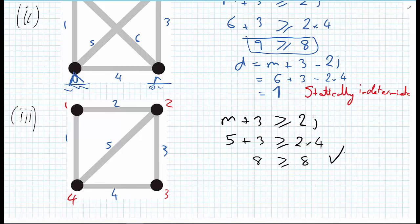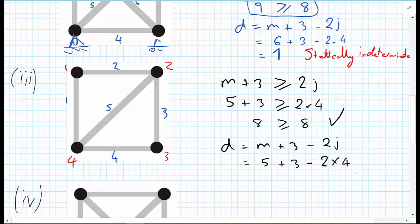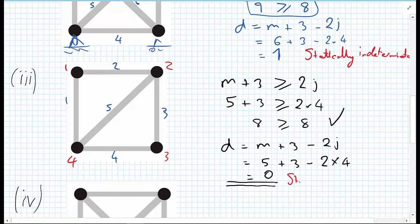We go on to look at the degree of indeterminacy using D equals M plus 3 minus 2J. So D equals 5 plus 3 minus 2 times 4, which equals 0. The degree of indeterminacy is 0, so we can use the equations of statics to solve this problem — this truss is statically determinate.